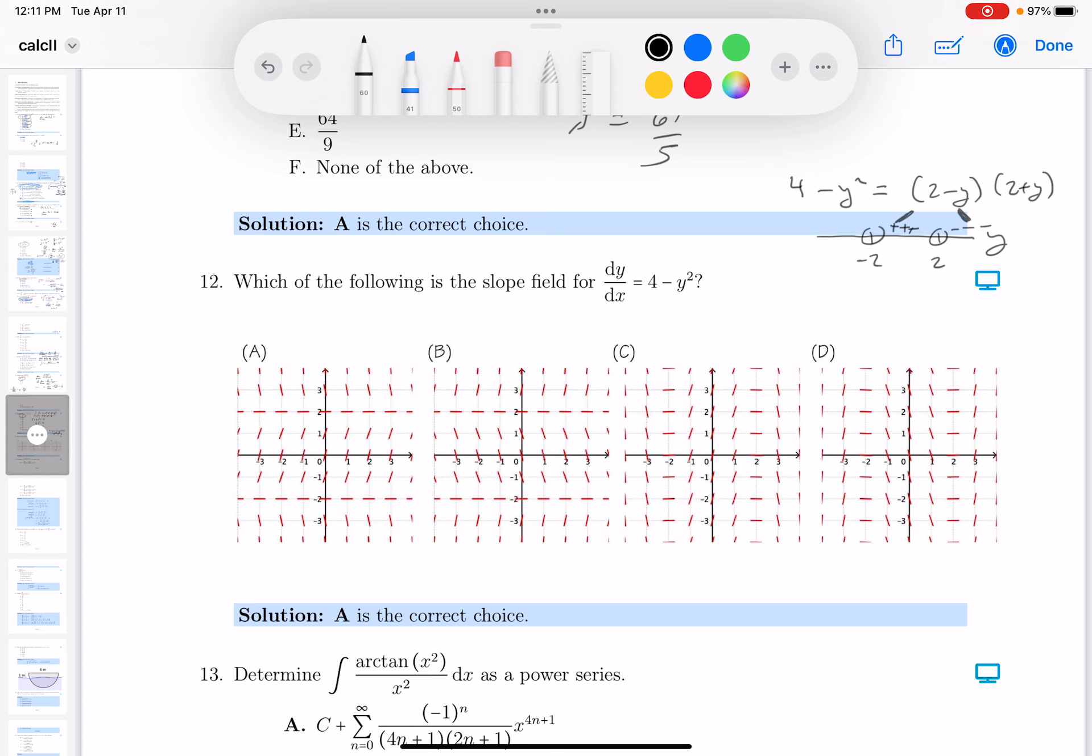Below minus 2, if I pick minus 3, I get negative slopes. I see this over here. At minus 2 and 2, though, I'd get flat lines. There's 0 slope there.